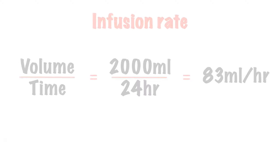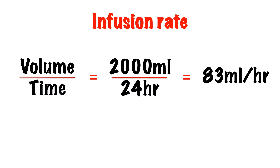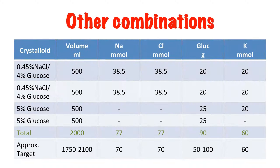What speed to give each bag at? Well, 2,000 ml in 24 hours works out at 83 ml per hour for each bag. We can achieve our daily target using any combination of the available crystalloids.